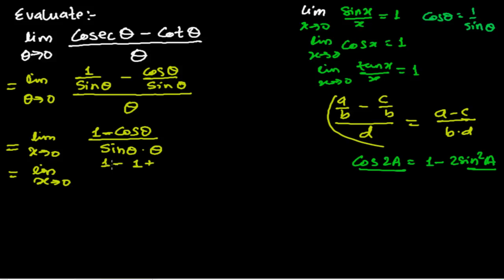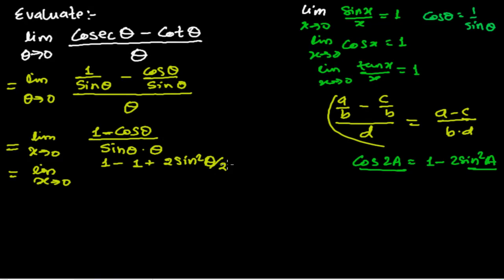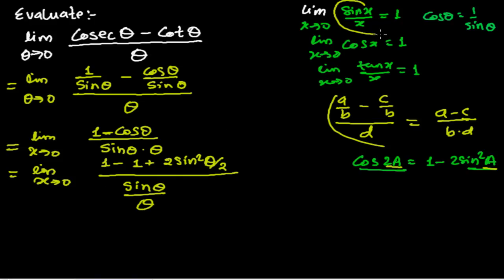Applying the formula: (1 - cos(θ)) becomes 2sin²(θ/2), because the minus signs cancel to give a plus. So now the numerator is 2sin²(θ/2), all divided by sin(θ) times θ. To get to the standard form sin(x)/x, I'm adding θ to the numerator and denominator myself, giving θ² overall.